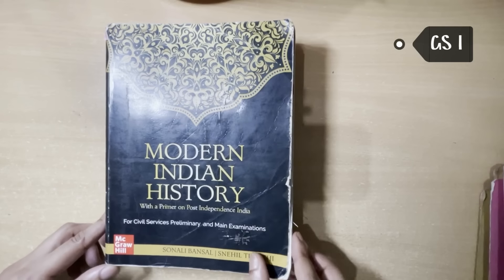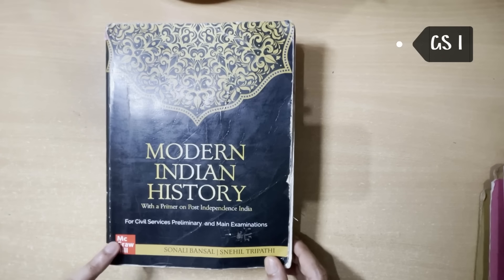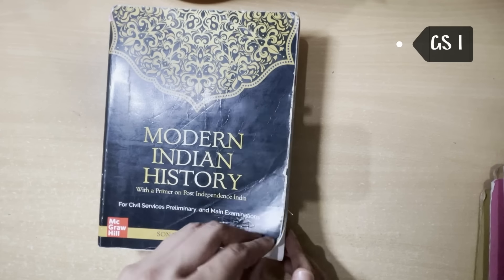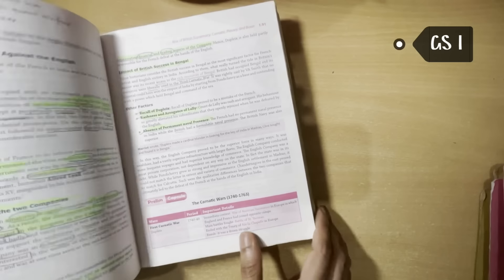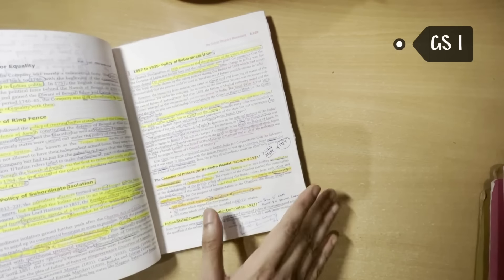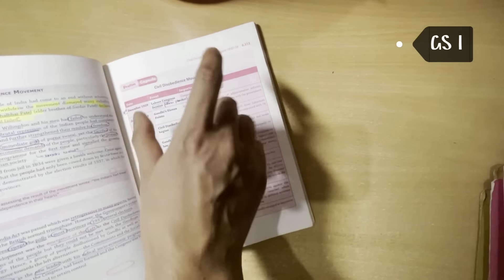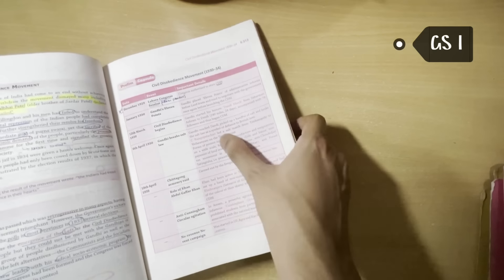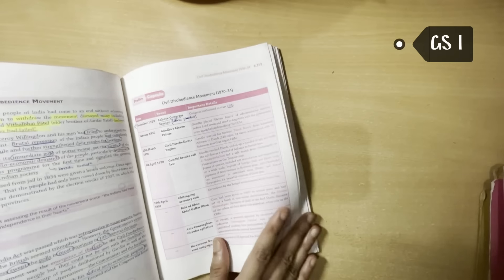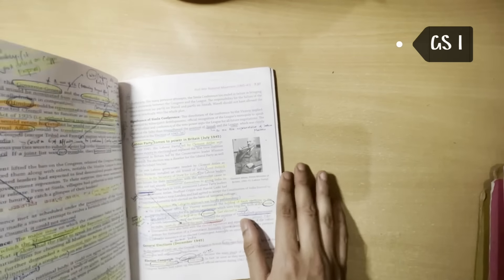So, for modern Indian history, I was using this book by McGraw Hill's publication, written by Sonali Bansal Ma'am and Sneha Tripathi Sir. And as you can see, I had done multiple rounds of revisions. This is a very exhaustive book, covers up most of the topics. And there are also certain things called village capsules, which are very useful before exams for the revisions. So multiple rounds of revisions of this book.